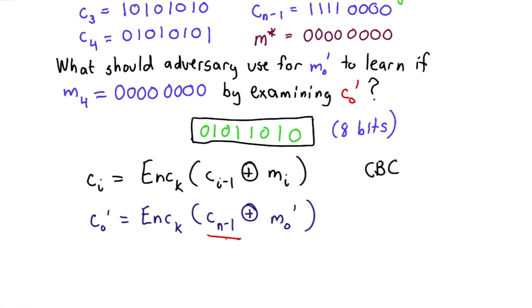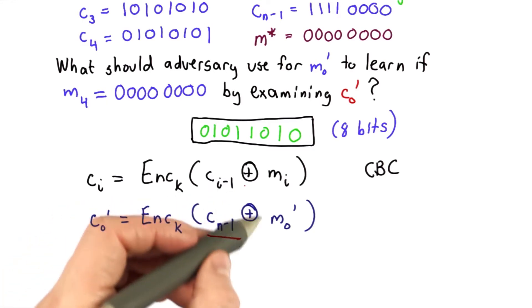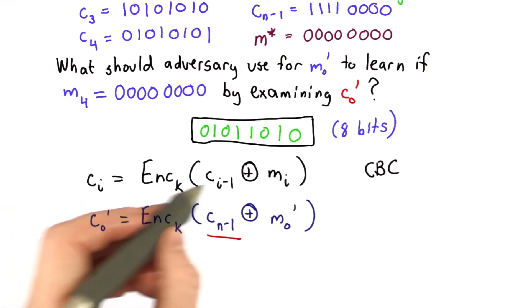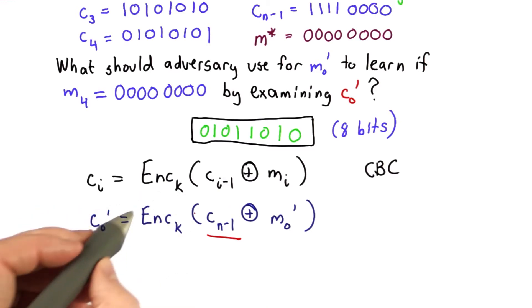So here's the danger. The adversary actually knows this value. So that means the adversary can pick a message value, so the value of C0' reveals something. That means it has to be an input to the encryption. We're assuming the adversary can't break the encryption, but it has to be an input to the encryption that the adversary already knows what the expected result is.